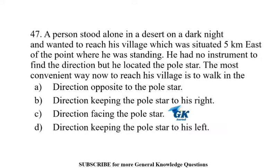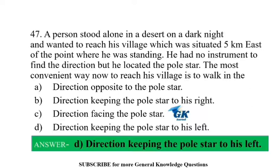A person stood alone in a desert on a dark night and wanted to reach his village situated 5 km east of the point where he was standing. He had no instrument to find the direction but he located the pole star. The most convenient way to reach his village is to walk in the direction keeping the pole star to his left.